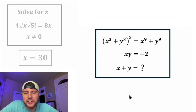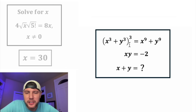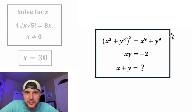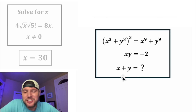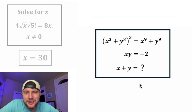And here's the next question. We have the quantity x cubed plus y cubed, whole thing cubed, equals x to the 9th plus y to the 9th. And xy is equal to negative 2. It wants us to solve for x plus y — this looks like it'll be a fun one. How exciting.